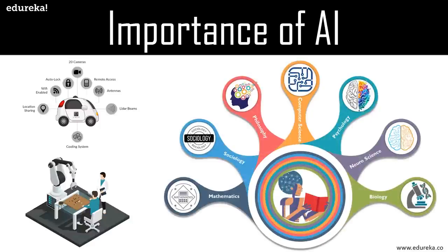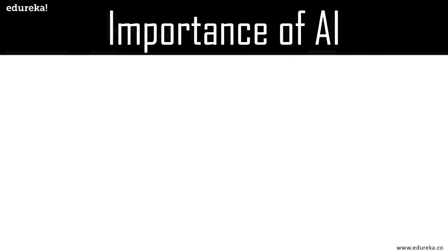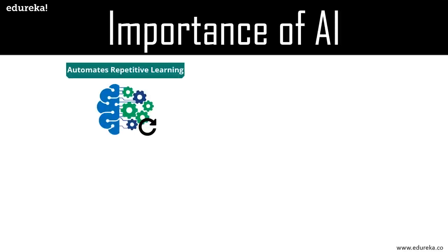There are many areas which contribute to artificial intelligence, including mathematics, sociology, philosophy, computer science, psychology, neuroscience, and biology. AI automates repetitive learning and discovery through data — it performs frequent, high-volume computerized tasks reliably and without fatigue. It also adds intelligence to existing products; in most cases AI will not be sold as an individual application, but rather products you already use will be improved with AI capabilities.